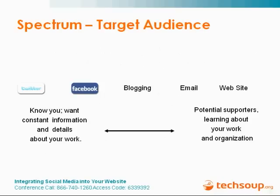One way to think about these different channels is to arrange them as a spectrum and consider how they differ across different lenses. When it comes to target audience, your website has a fairly anonymous component — most traffic comes from search engines like Google, so you have potential supporters and general public landing anonymously. As you move across the spectrum, email is a less anonymous channel because people have given you their email addresses, signaling they are willing to let you communicate with them. Blogging takes that further — people have subscribed to your blog and may comment and interact with you.